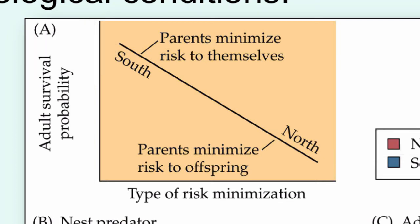This affects their parental care decisions. If you look at how they minimize risk in the tropics, where the parents have the potential to live for a long period of time, when threatened personally, they want to minimize the risk to themselves. The northern birds, because they have a relatively short lifespan, need to maximize their reproductive success each year. So they'll minimize the risk to their offspring, even if it does put them at risk.